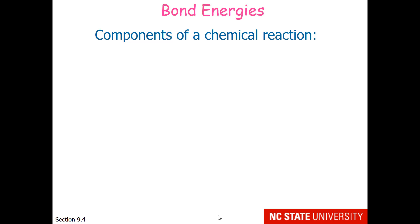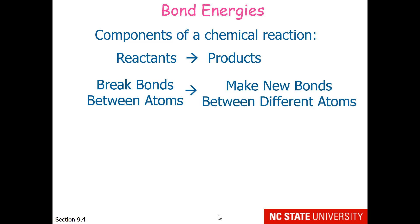If we look at the components of a chemical reaction, reactants go to products. For reactants, we need to break the bonds between the atoms and rearrange them to the products where we make new bonds between different atoms.